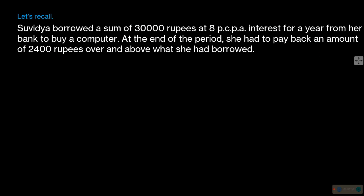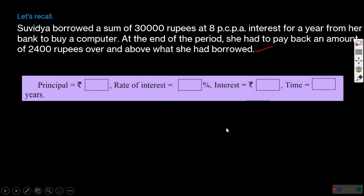Here is a situation given in the textbook. Suvidya borrowed a sum of rupees 30,000 at 8% per annum interest for a year from her bank to buy a computer. At the end of the period she had to pay back an amount of rupees 2,400 over and above what she had borrowed. Let us analyze: the borrowed amount — called principal — is equal to 30,000 rupees.